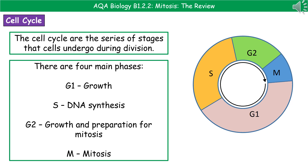The simplified diagram on the right shows we've got four main phases to the cell cycle. You've got G1, S, G2, and M. G1 is a growth phase, S is the DNA synthesis phase, G2 is more growth and preparation for mitosis, and finally M is the mitosis phase.